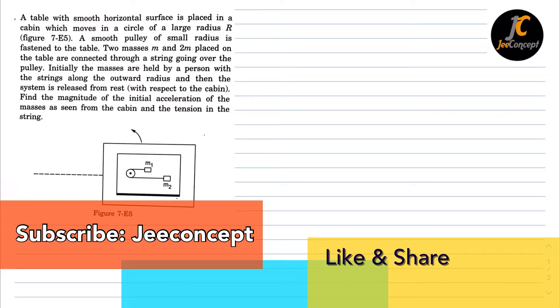Hello everyone. In this question, a table with smooth horizontal surface is placed in a cabin which moves in a circle of large radius R. A smooth pulley of small radius is fastened to the table. Two masses M and 2M placed on the table are connected through a string going over the pulley.